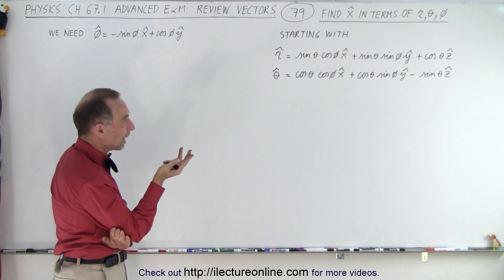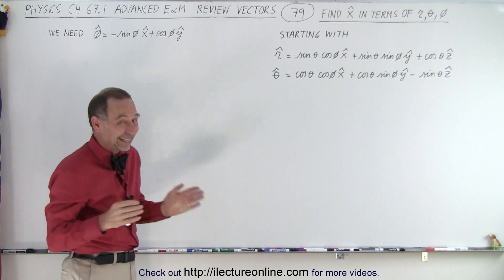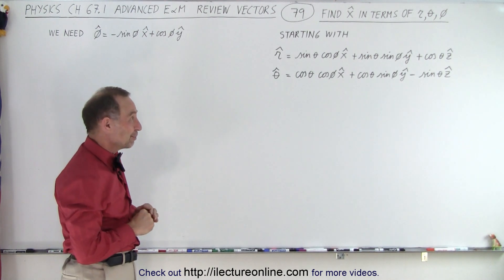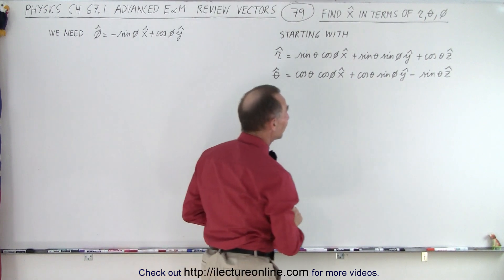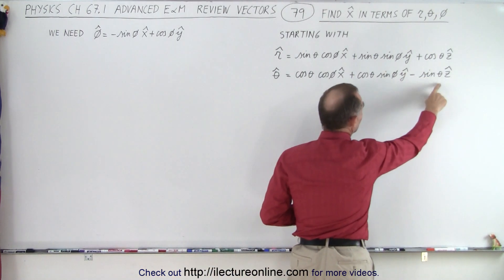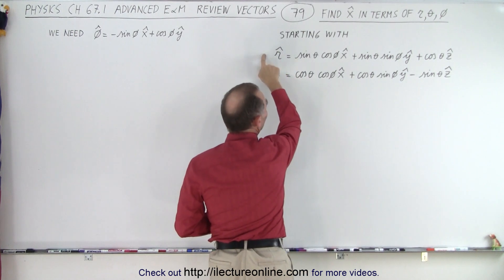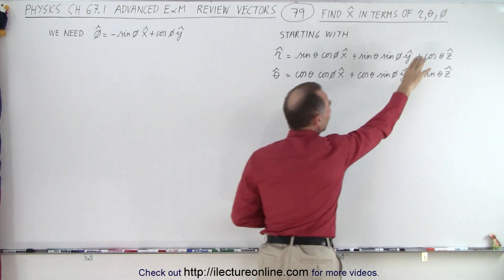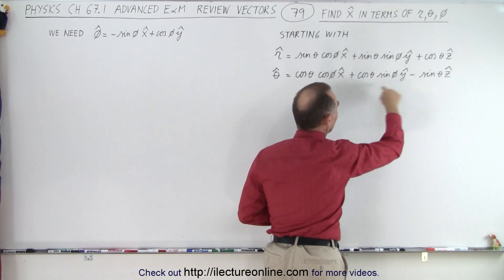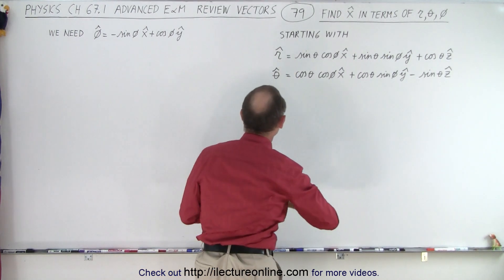How do we do that? Well, we need a few mathematical tricks — if you can't think of those it'll be hard to do. It turns out that when you look at these two equations, we can eliminate the z unit vector by multiplying the top by the sine of theta, the bottom by the cosine of theta, and then adding those two together. Let's go ahead and do that.